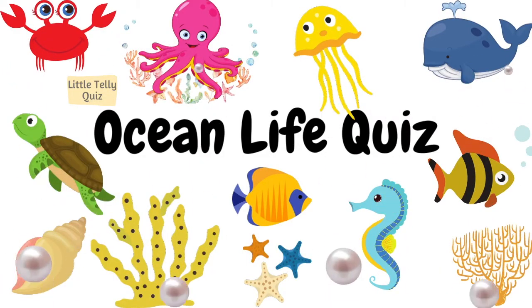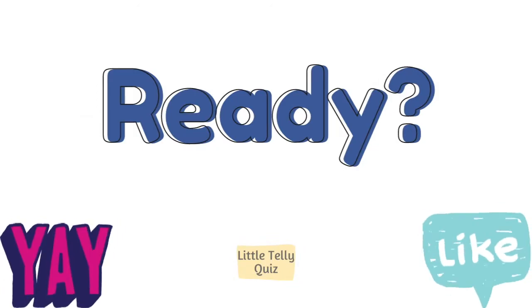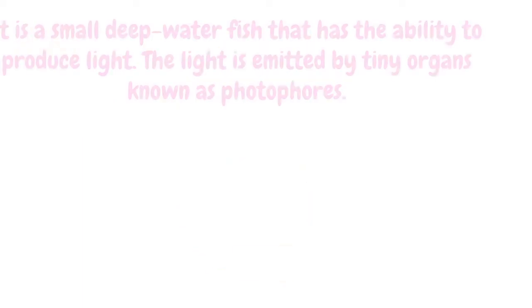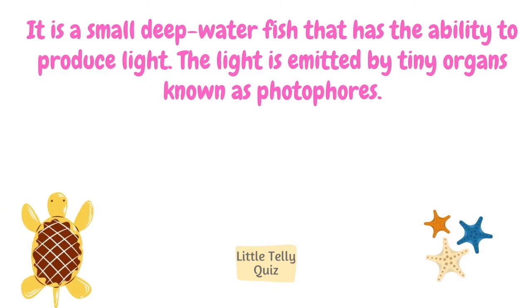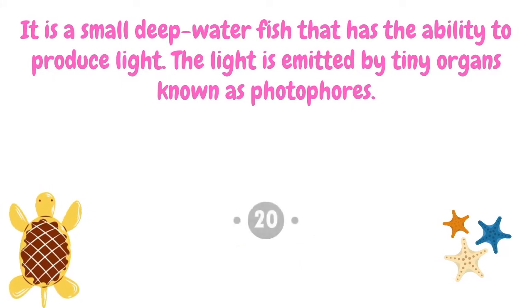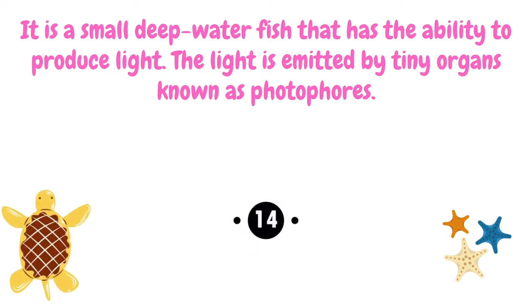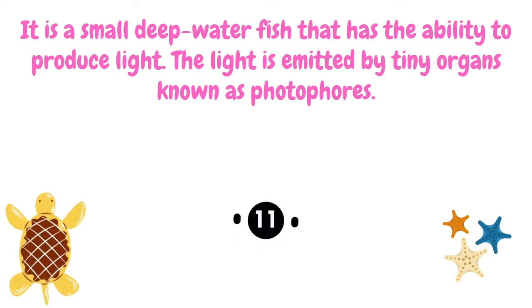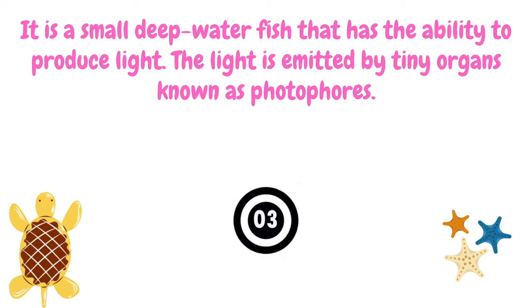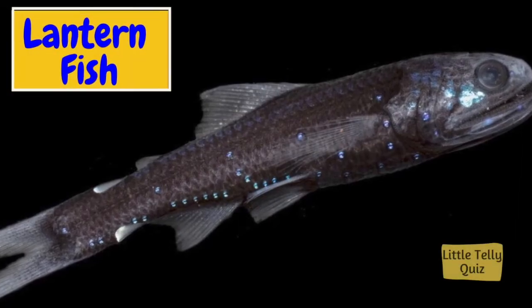Hello everyone, today we will solve an ocean life quiz. Ready? Let's go! It is a small deep water fish that has the ability to produce light. The light is emitted by tiny organs known as photophores. The answer is lantern fish.